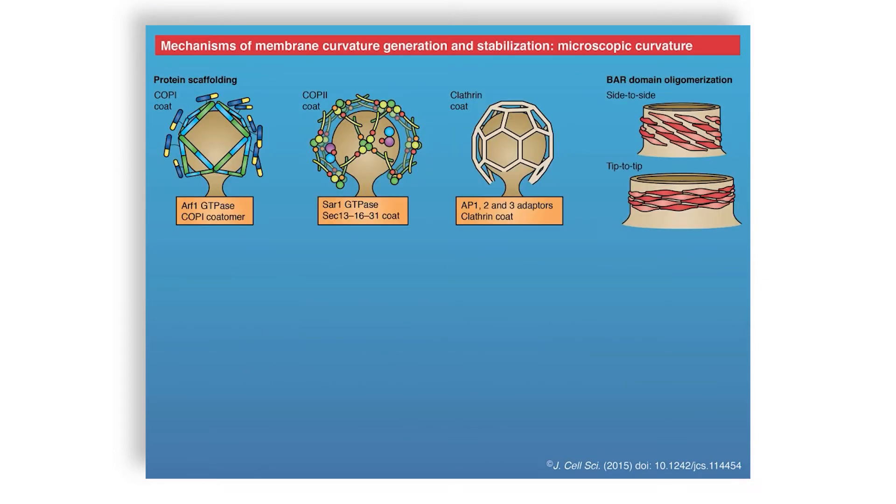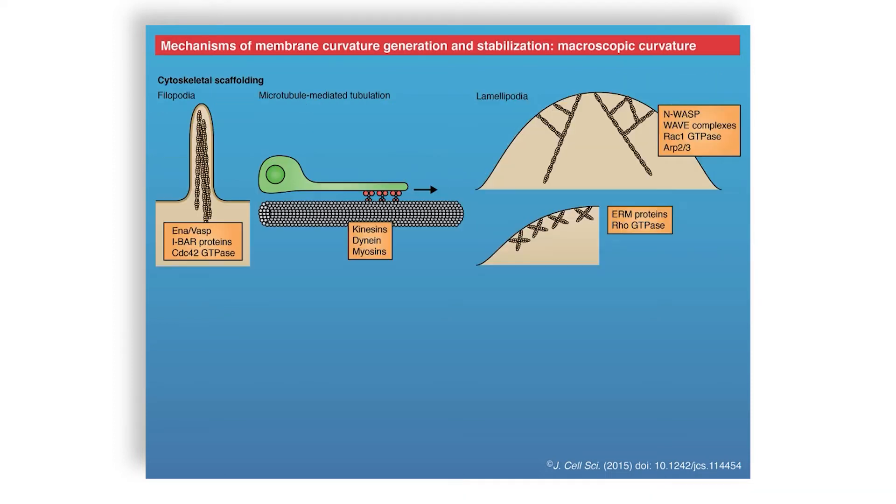Microscopic curvature is where you can actually see at micrometer scale, and these are protein scaffolding structures like COP1 coats, COP2 coats, clathrin coats—these are very important for vesicular endocytosis and budding. BAR domain proteins, side-to-side arrangement or tip-to-tip arrangement is seen to be one of the many ways by which these microscopic, micrometer-sized curvature structures can be formed. Finally, coming to the whole cell, what we are now referring to as microscopic—that is, tens of micrometers—ranges of curvature can be seen in the formation of filopodia, microtubule-mediated tension tubulation, and lamellipodia driven by either actin or microtubules.